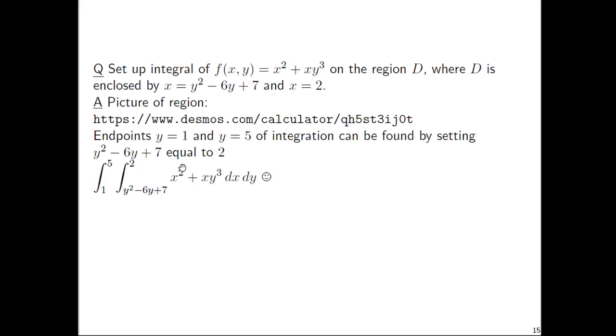And then the dx, so x has to range from the function to the constant function, 2. Because the values of y² - 6y + 7, those are the smaller x values. So this is the setup. Y ranges from 1 to 5 and has to be the outer integral. The constant should always be on the outer integral.